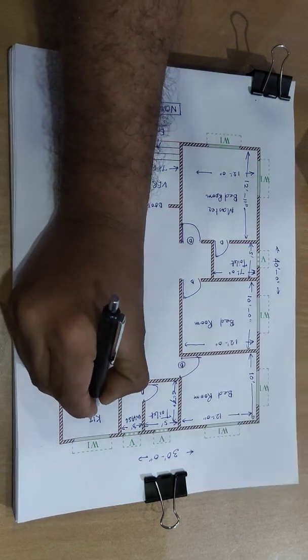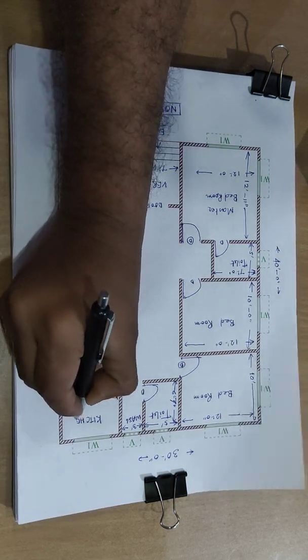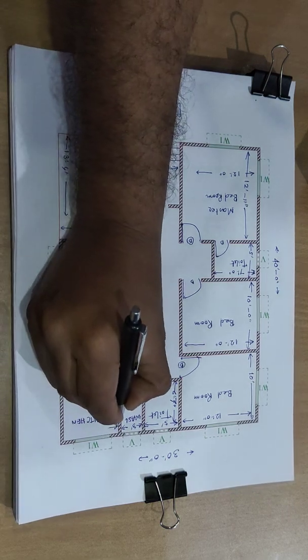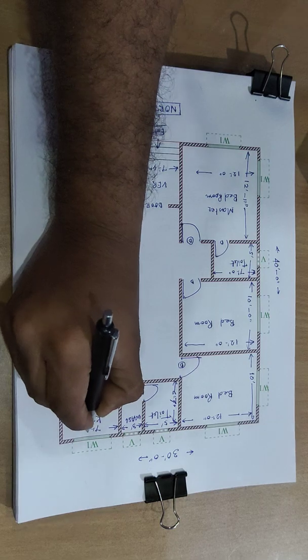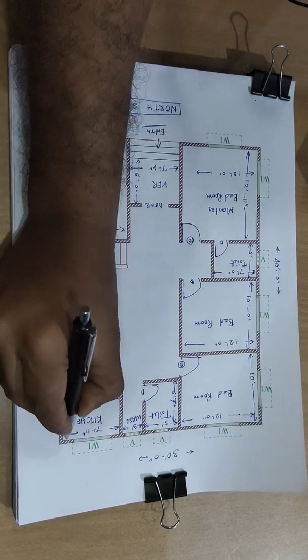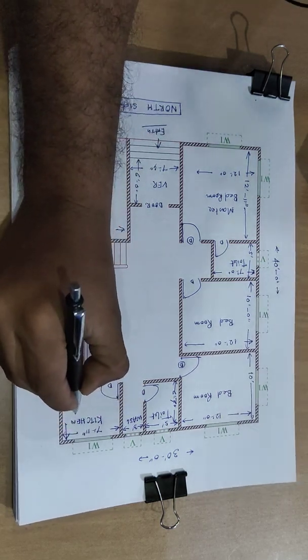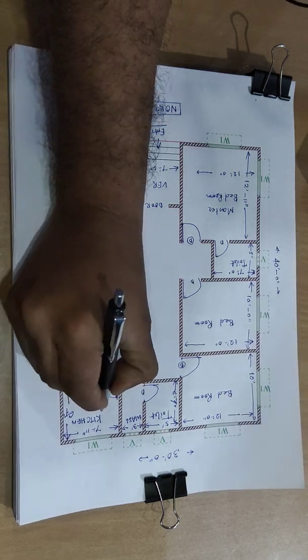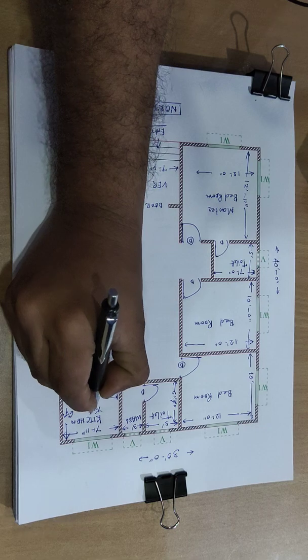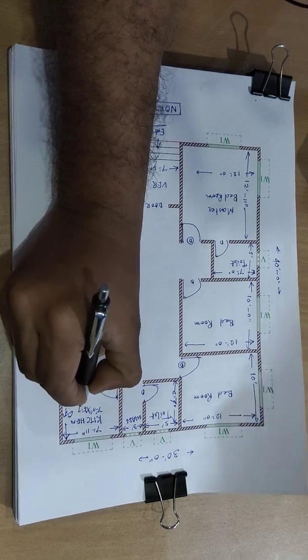Kitchen. Kitchen size 7 feet 11 inch, and this direction 6 feet 7 inch. Okay, kitchen 7 feet 11 inch into 6 feet 7 inch.